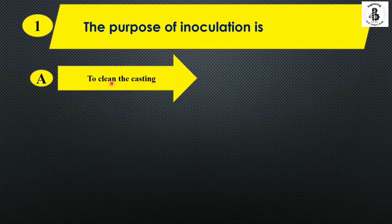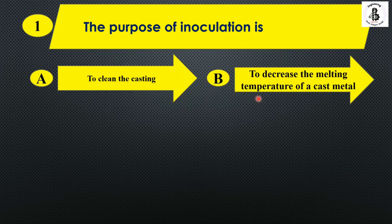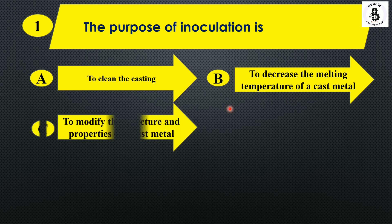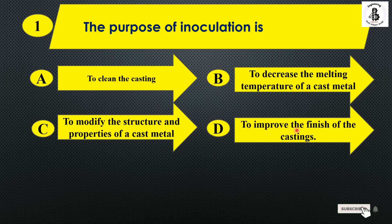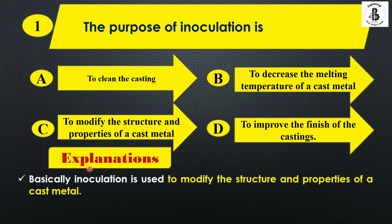Option A: to clean the casting. Option B: to decrease the melting temperature of a cast metal. Option C: to modify the structure and properties of a cast metal. Option D: to improve the finish of the castings. Inoculation is used to modify the structure and properties of cast metal, so the right answer is option C.